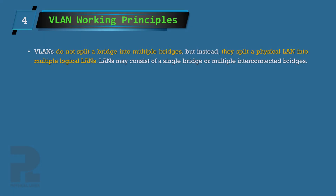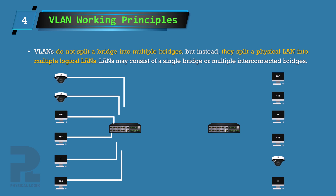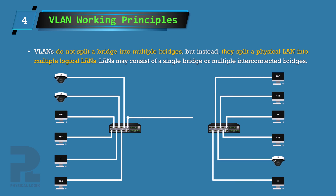It is important to note that VLANs do not split a bridge or switch into multiple bridges, but rather split a large physical LAN into multiple small logical LANs called VLANs. This means it can be applied on a LAN consisting of a single bridge or multiple interconnected bridges that are part of the same broadcast domain. In this example, all users from the marketing department belong to the green VLAN, users in research and development belong to the blue VLAN, users in IT belong to the red VLAN, and all IP cameras belong to the yellow VLAN.